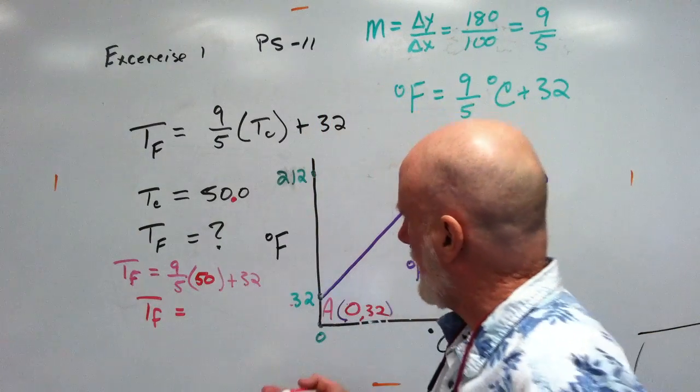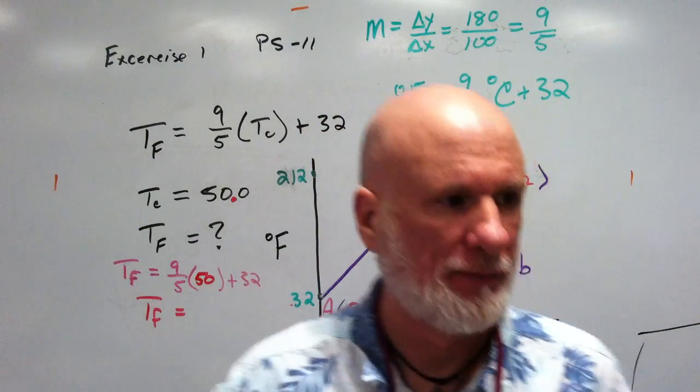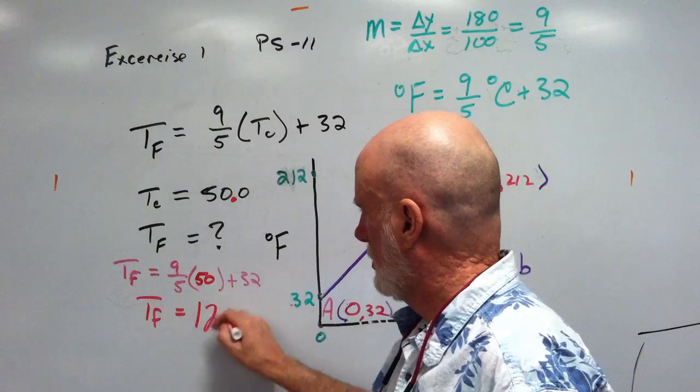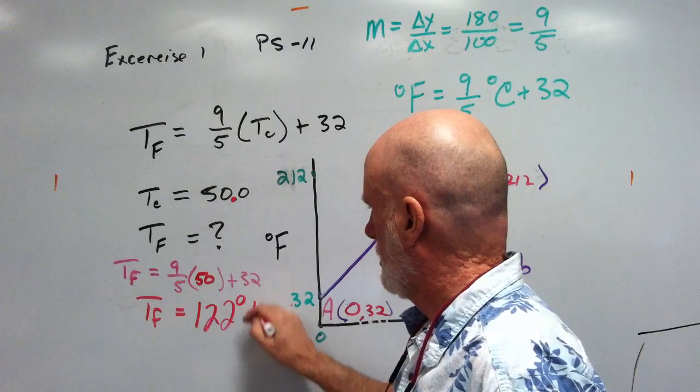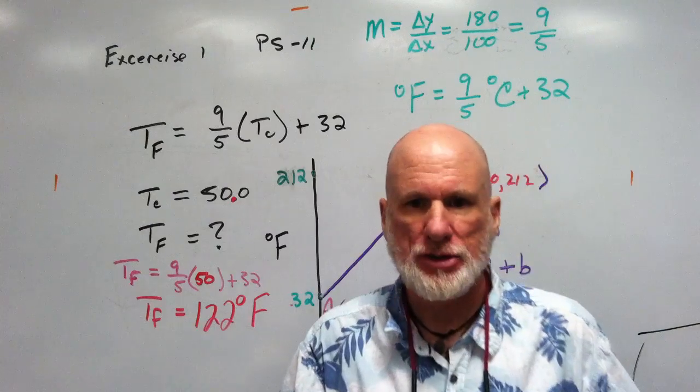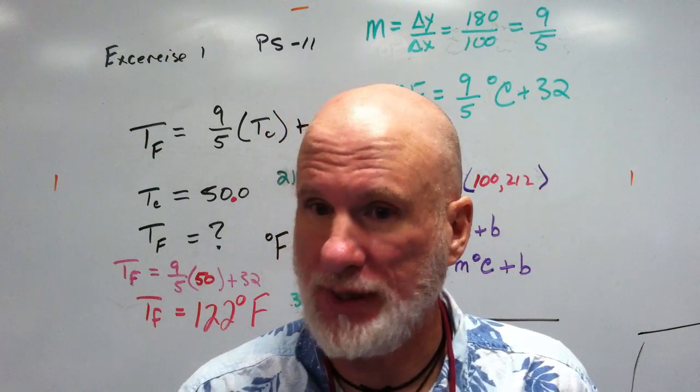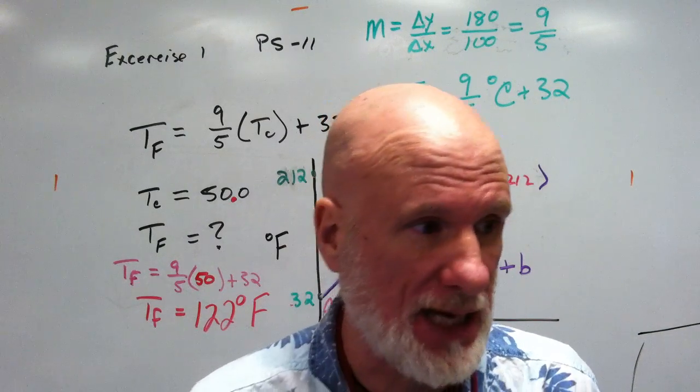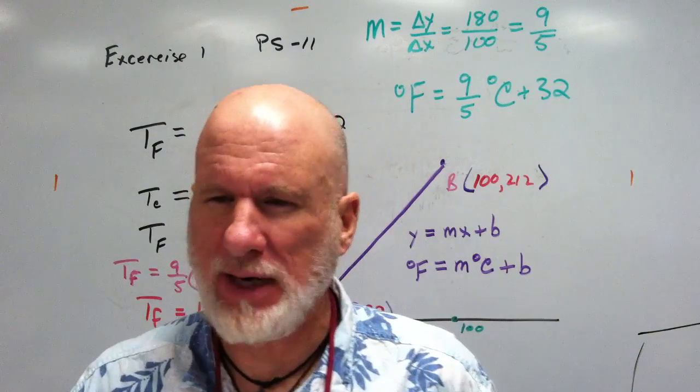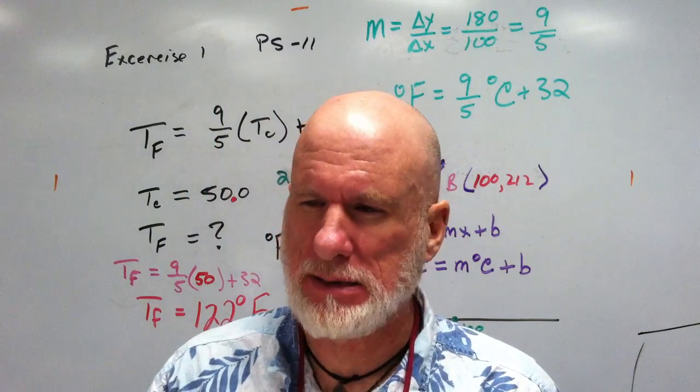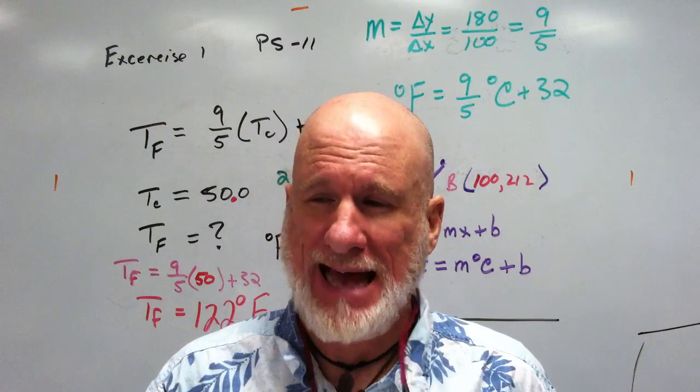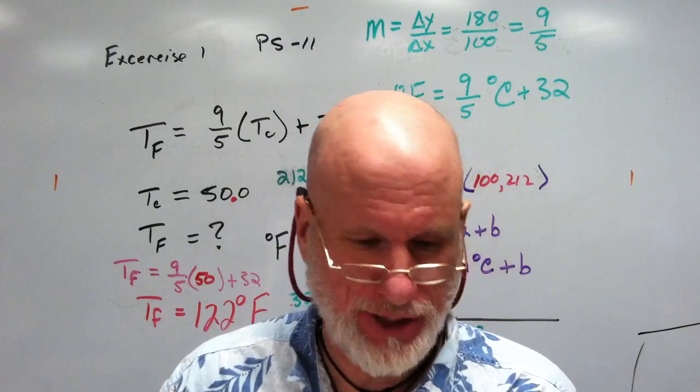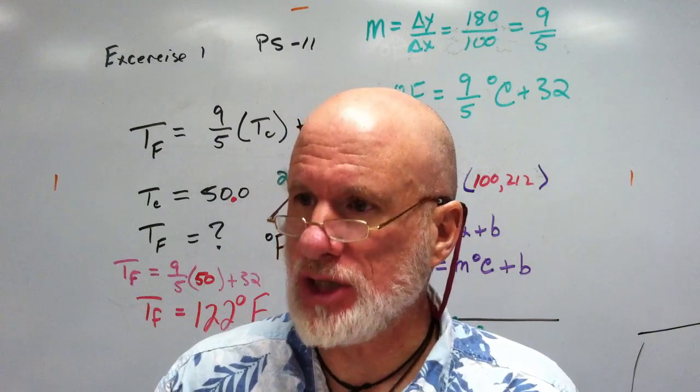So TF would be nine times 50 is what? 450 divided by 5? 90. 90 plus 32? 122. So if somebody says that it's 122 degrees outside or it's 50 degrees Celsius outside, don't go out. Evidently where I'm going next year in Abu Dhabi, I'm not quite sure it gets that hot, but it gets pretty hot. You don't even like the hot. I don't. That's why I like air conditioning. It says, this is the question.